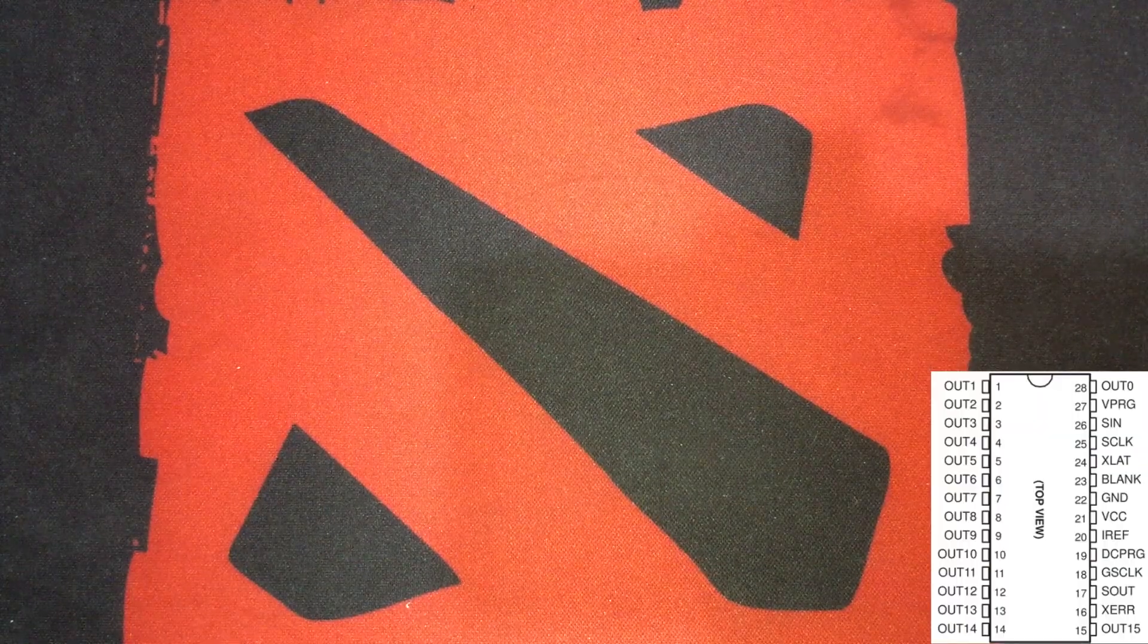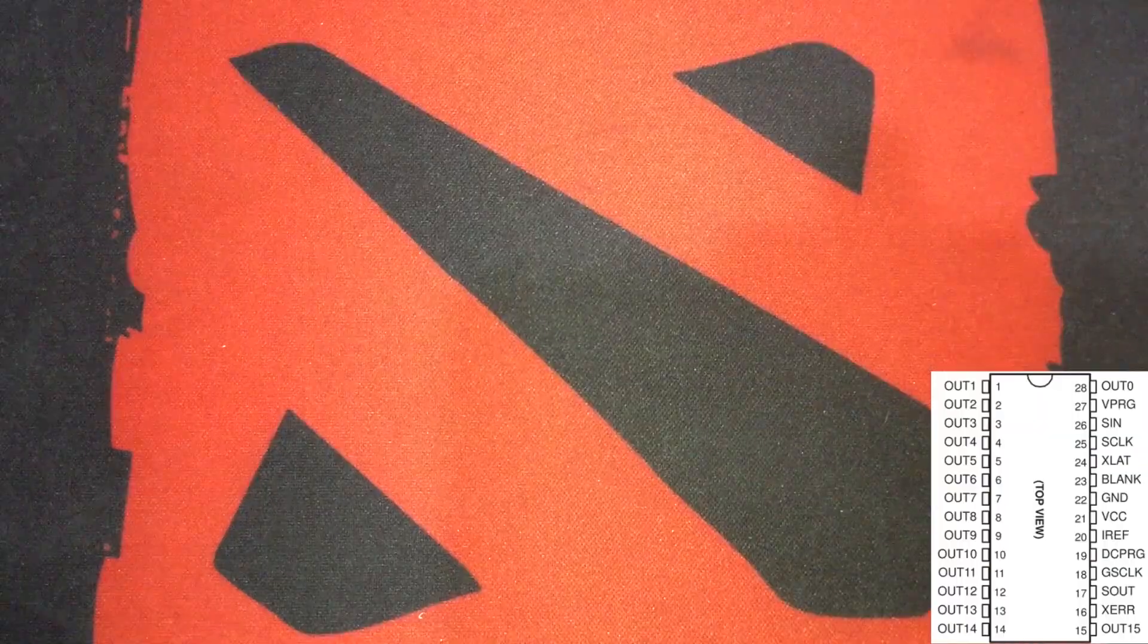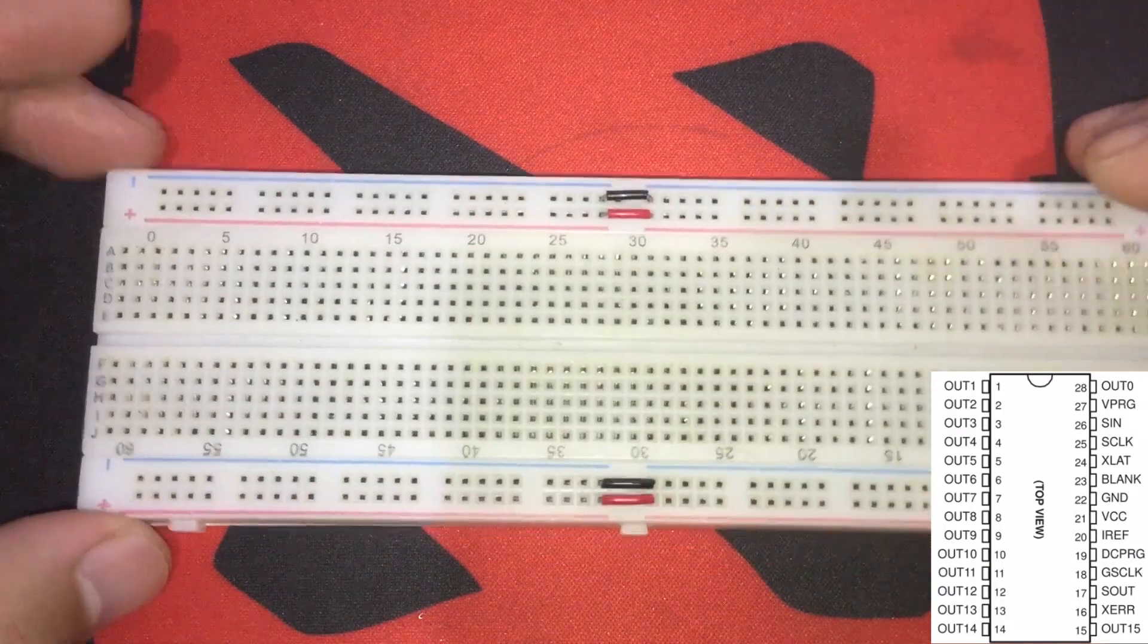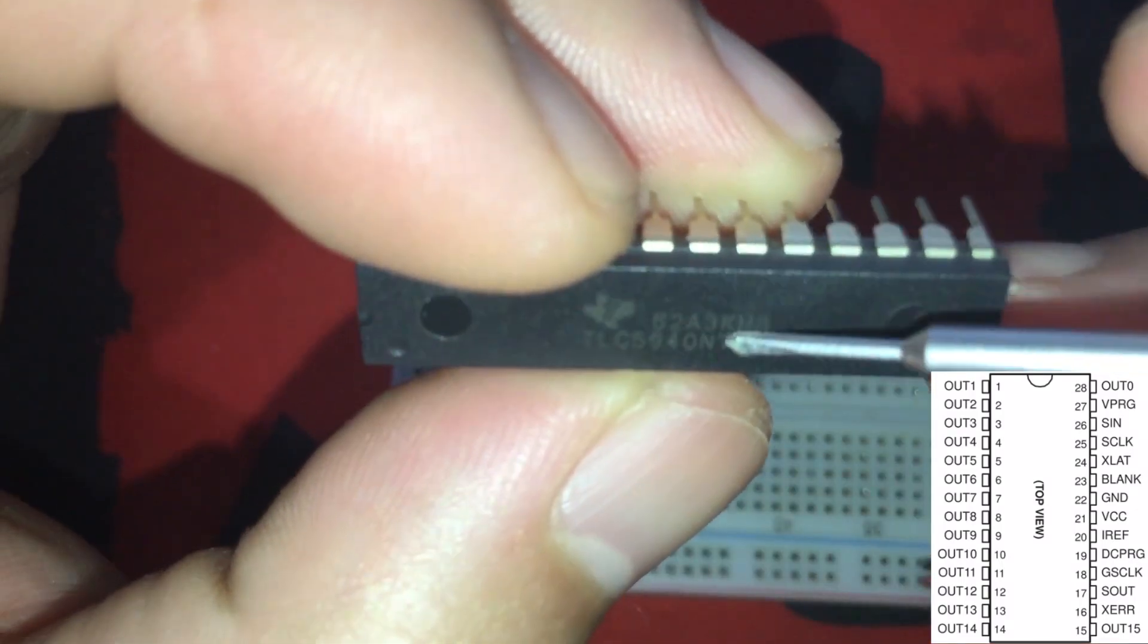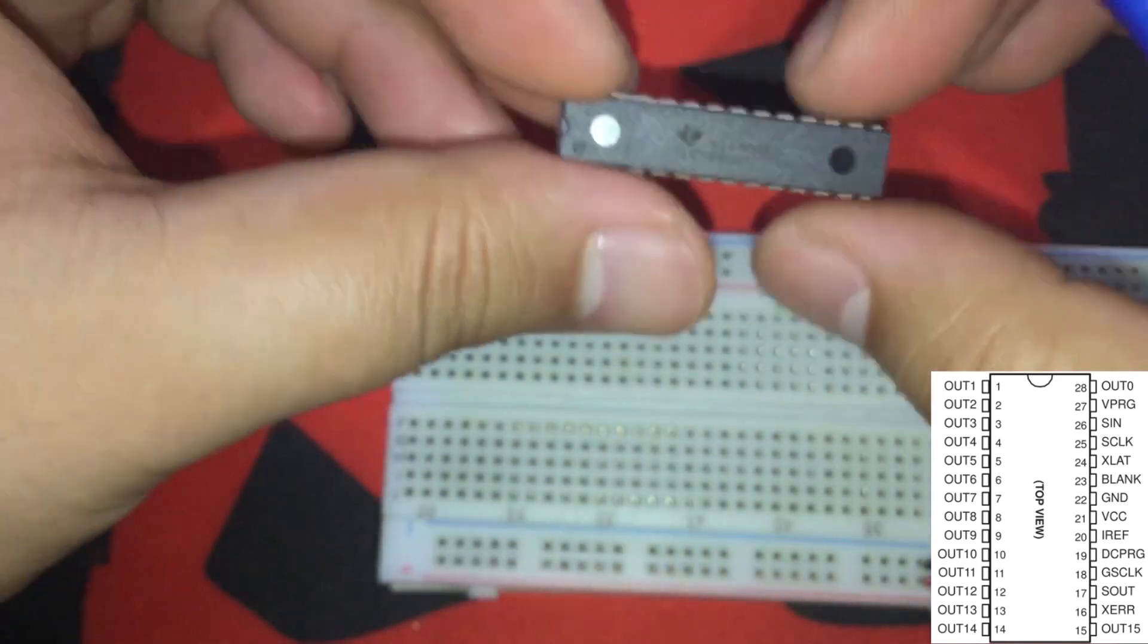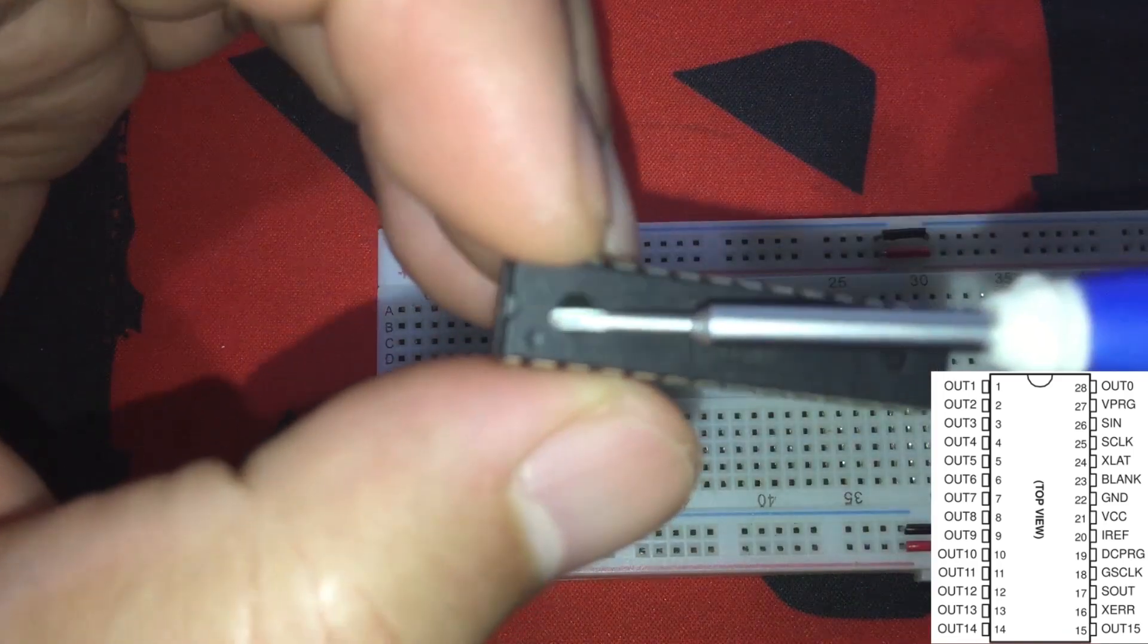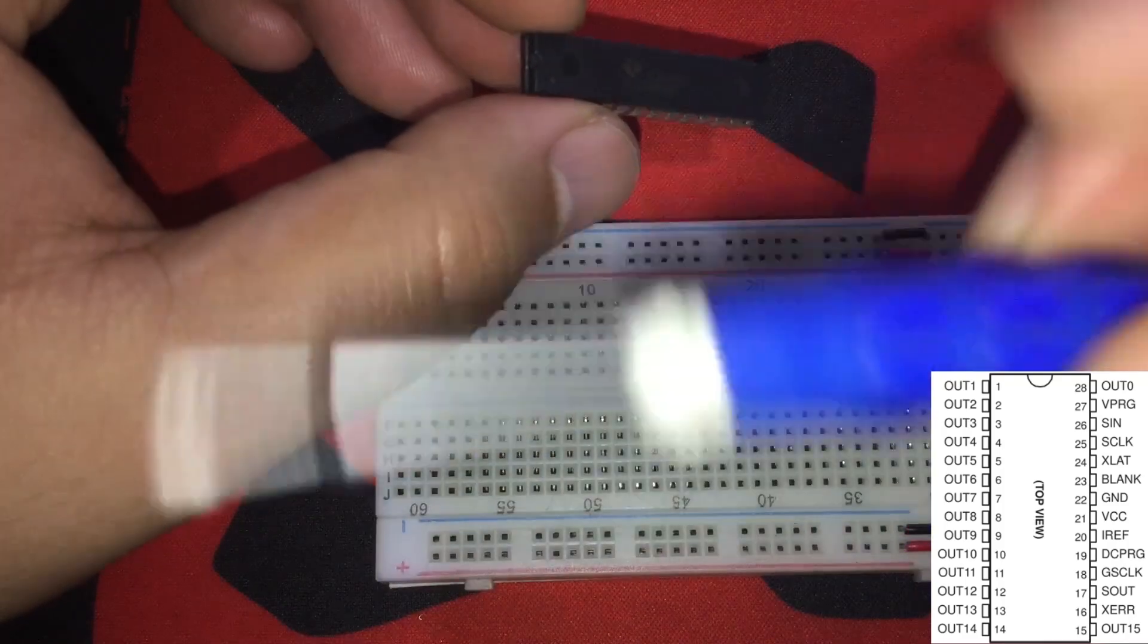Here's a diagram of the IC for reference. So let's start by wiring up a single IC first. Again, this is the TLC-5940NT. Let's connect it to the breadboard. Make sure that the notch here is on the left side.